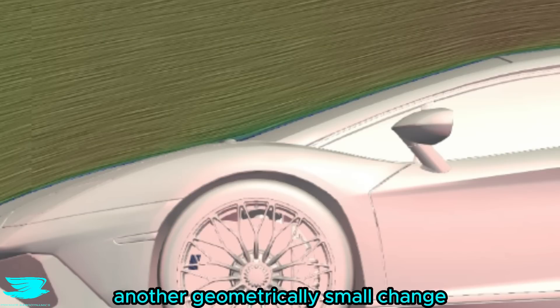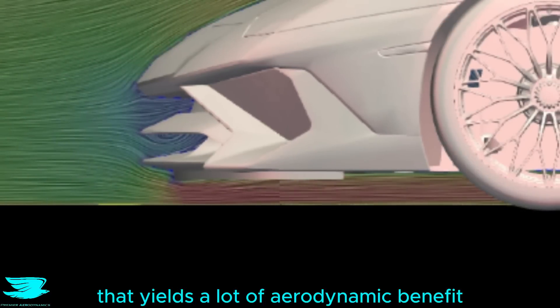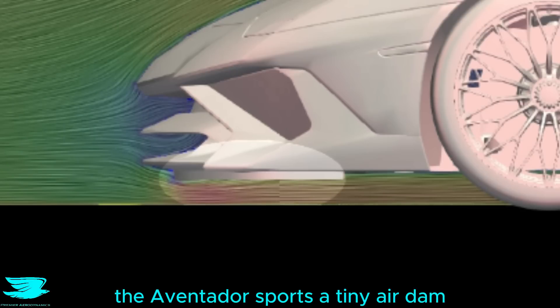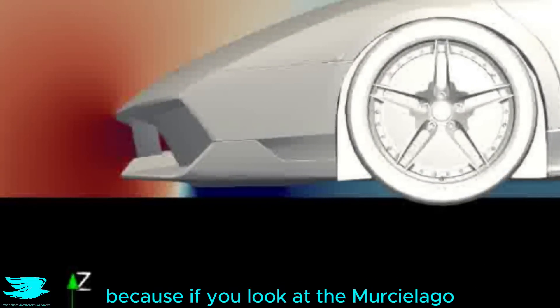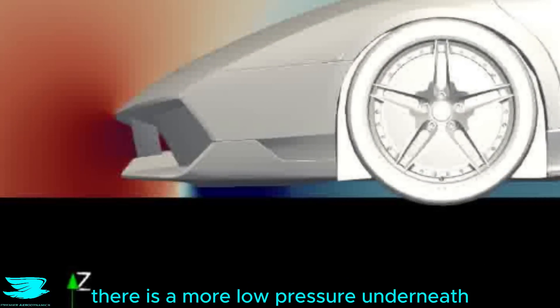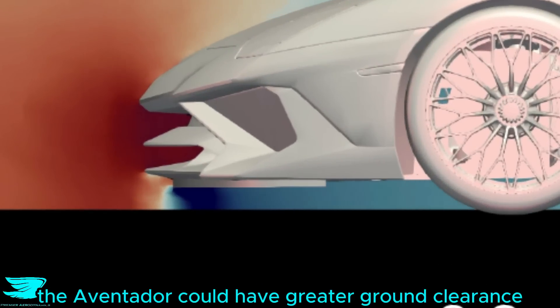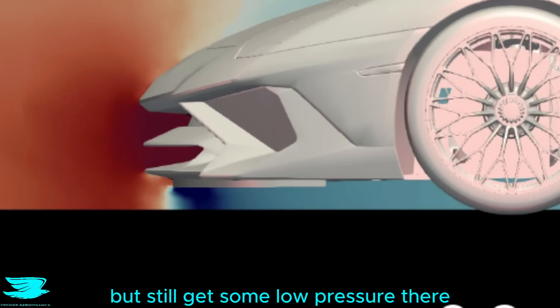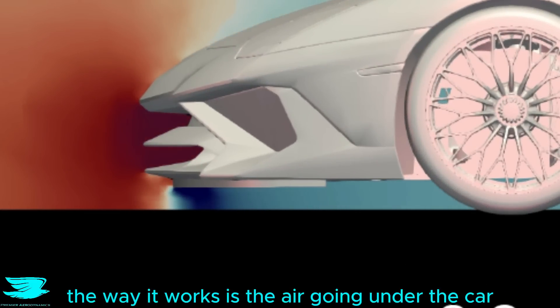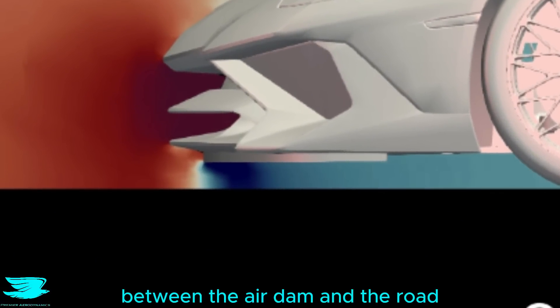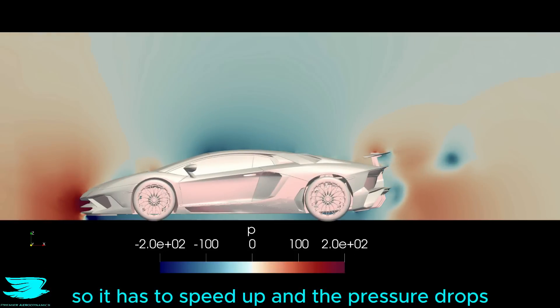Another geometrically small change that yields a lot of aerodynamic benefit, if you look under the awesome front of the car, the Aventador sports a tiny air dam, this vertical plate coming down. This was necessary because if you look at the Murciélago, there is more low pressure underneath, but the ground clearance was lower too. With this air dam, the Aventador could have greater ground clearance but still get some low pressure there. The way it works is the air going under the car gets squeezed through a smaller gap between the air dam and the road, so it has to speed up and the pressure drops.